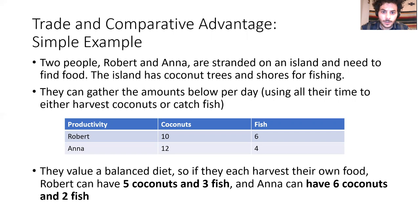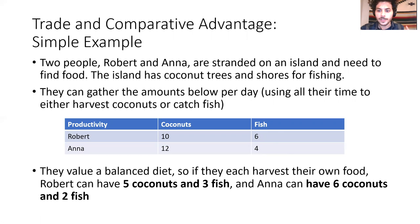Each person has a productivity in either sector. If Robert spends his day harvesting coconuts, he gets 10; if fishing, he gets 6. Anna, spending all her time on coconuts, gets 12; fishing, she gets 4. Since they value a balanced diet, if each harvests their own food independently, Robert ends up with 5 coconuts and 3 fish—spending half his time on each. Anna gets 6 coconuts and 2 fish.